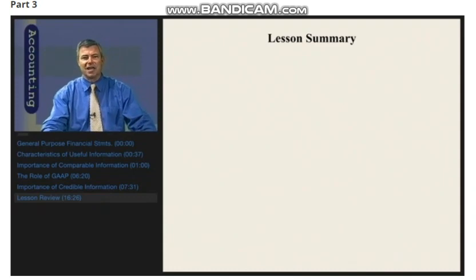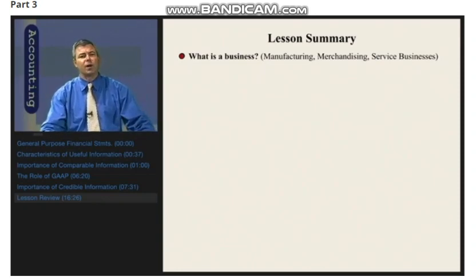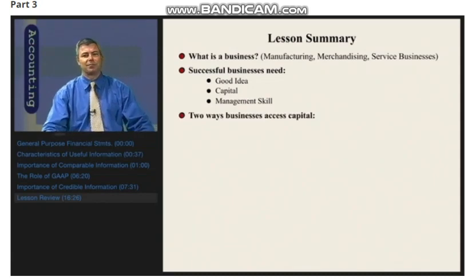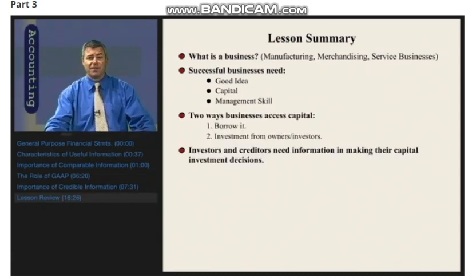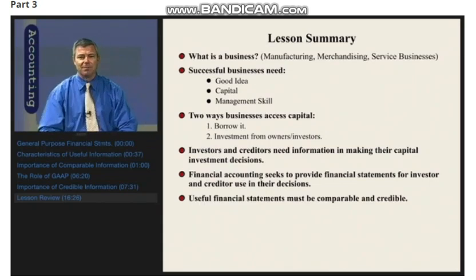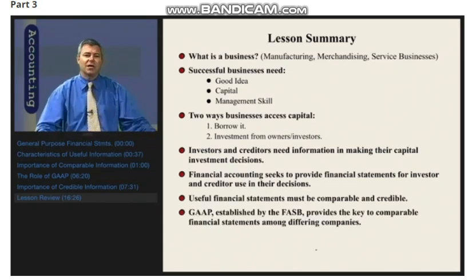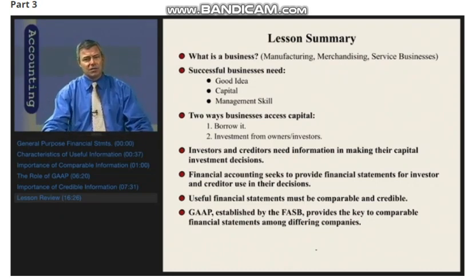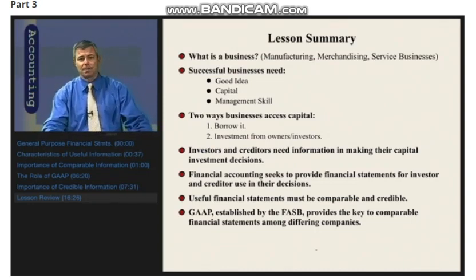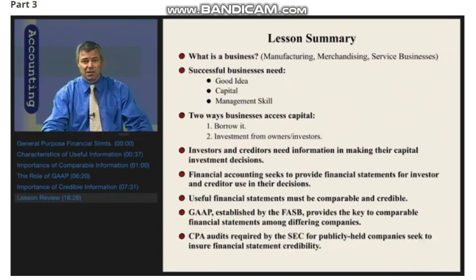Let's do a quick summary of where we are today in this lesson. We started out by talking about what a business is — manufacturing versus merchandising versus service businesses, or some combination. We talked about how any one of these businesses, in order to truly be successful, would need a really good idea, some capital, and some management skill — and that capital is perhaps the most difficult thing to access. There are really only two ways a business can access capital: you can either borrow it, or you can get it from investors. Investors and creditors need information in making their capital investment decisions, and it's financial accounting that seeks to provide financial statements for that use. Useful financial statements must have the elements of comparability and credibility. Generally accepted accounting principles established by the FASB provide the key to comparable financial statements. These GAAP rules govern what information is provided, in what format, and how transactions are accounted for. It's also critical that those financial statements be materially accurate, accomplished through CPA-certified public accounting firm audits required by the SEC for publicly held companies.